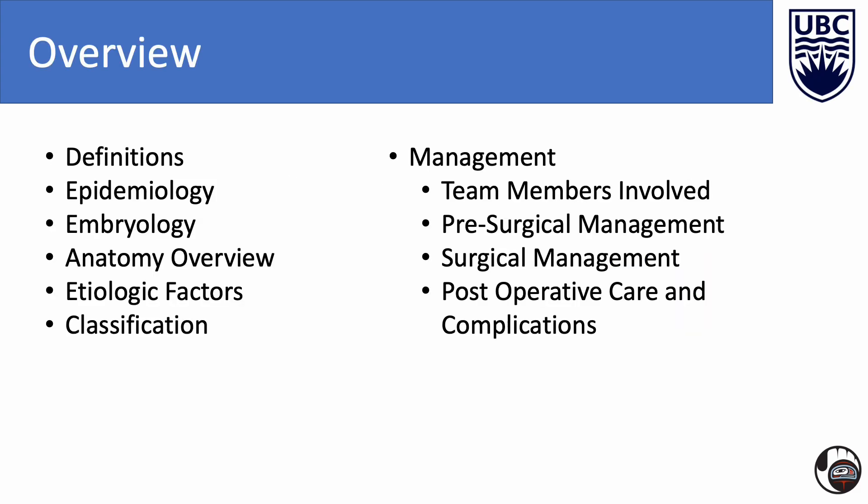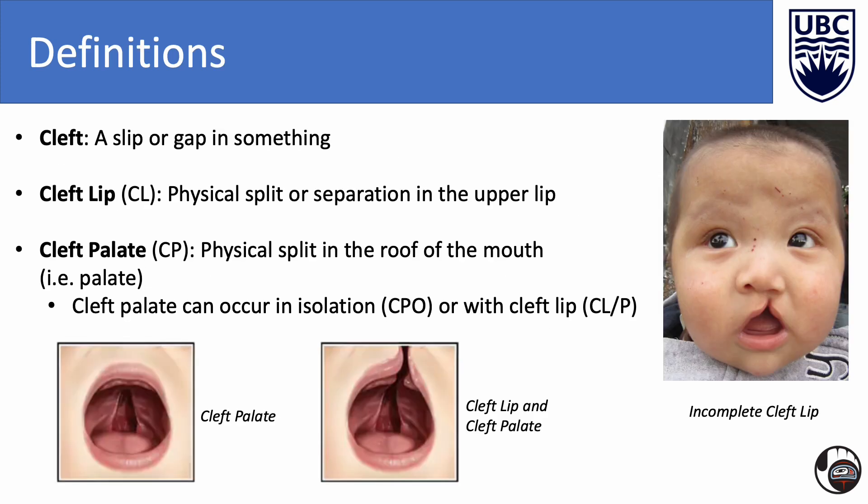Today we will go over the following topics regarding cleft lip and cleft palate. A cleft is defined as a slip or gap in something. A cleft lip is a separation in the upper lip which can vary in size, ranging from a small notch to a large gap that extends up to the nose. A cleft palate is a failure in the formation of the palate during embryonic development, resulting in a split in the roof of the mouth. Cleft palates can occur in isolation or can manifest with cleft lips.